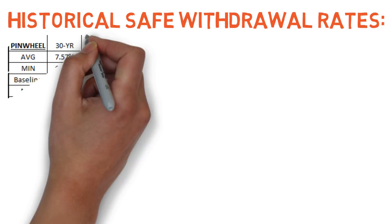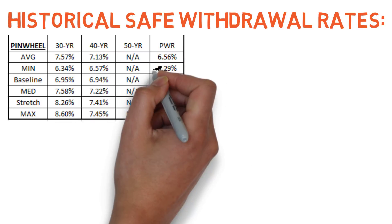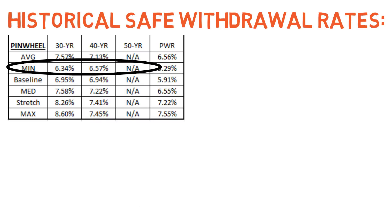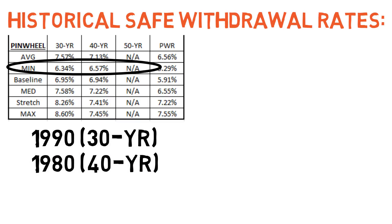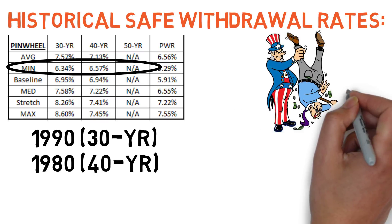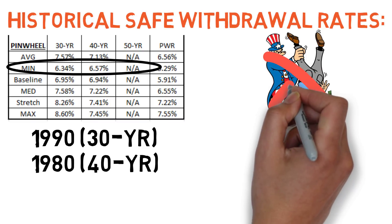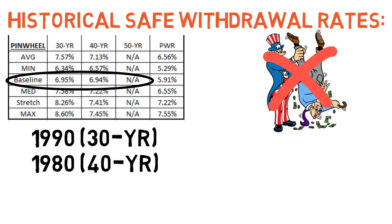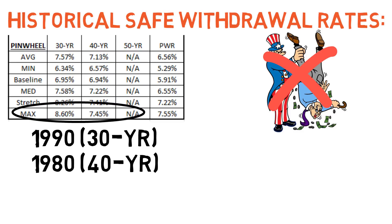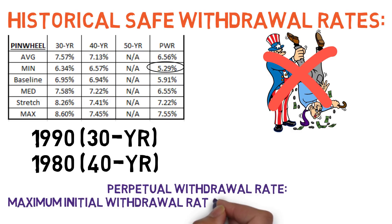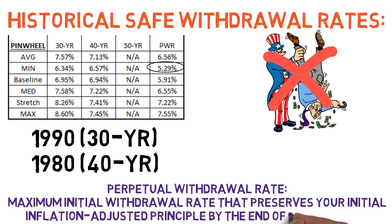The Pinwheel strategy would have maintained minimum safe withdrawal rates of 6.34% over any 30-year stretch and 6.57% over any 40-year stretch from 1976 through 2019. The worst year to retire was 1990 for the 30-year stretch and 1980 for the 40-year stretch. The median rates were 7.58% and 7.22% for the 30- and 40-year scenarios respectively, and the maximum rates were 8.6% set in 1985 and 7.45% set in 1976. The strategy would have maintained a minimum perpetual withdrawal rate of 5.29%.